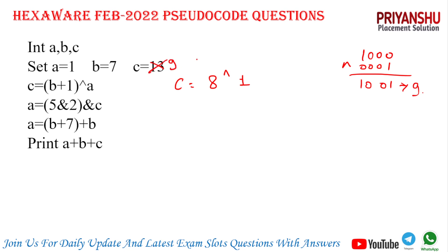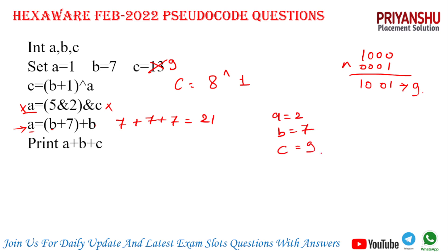So the value of c is not 13, we got 9. Next, a = b + b + b, so b is 7, and 7 + 7 + 7 = 21. So a is 21, b is still 7, and c is 9. Adding all: 21 + 7 + 9 = 37. The answer is 37.